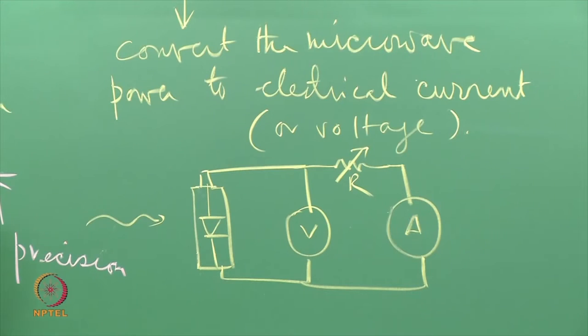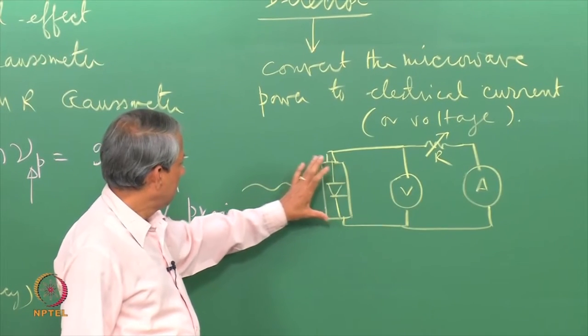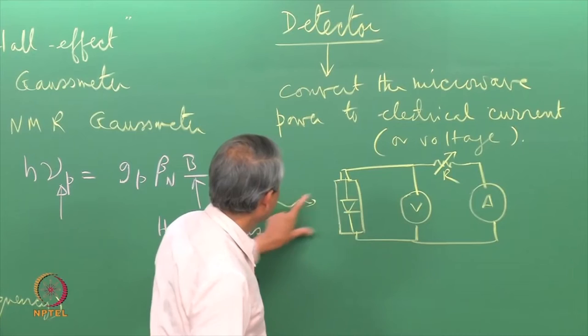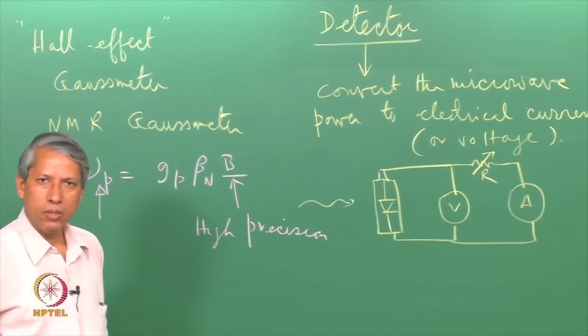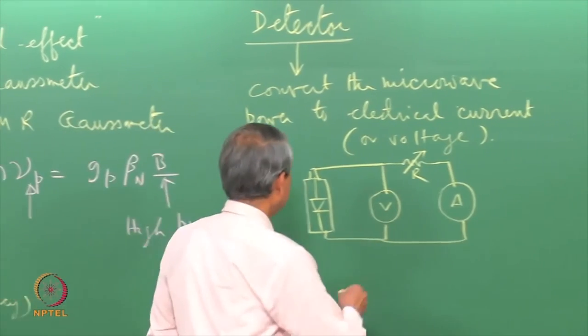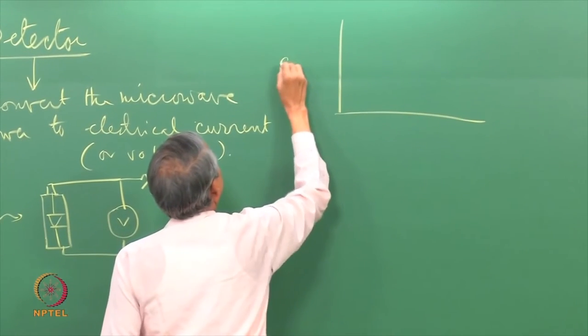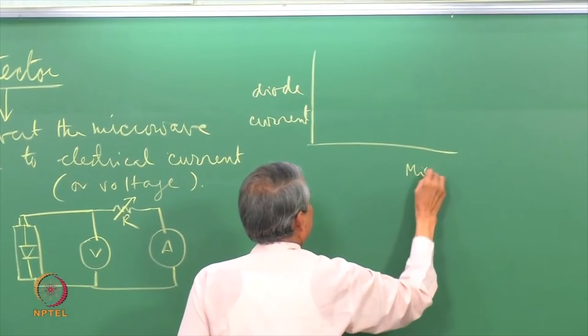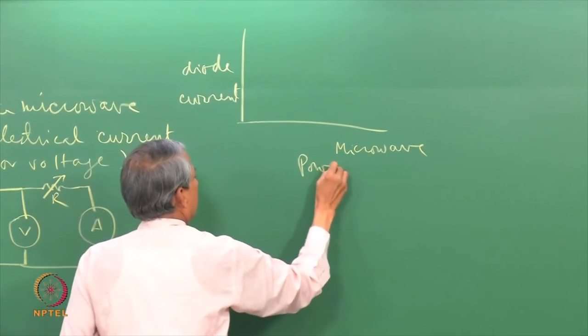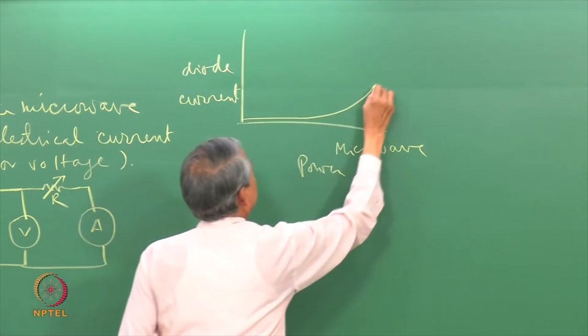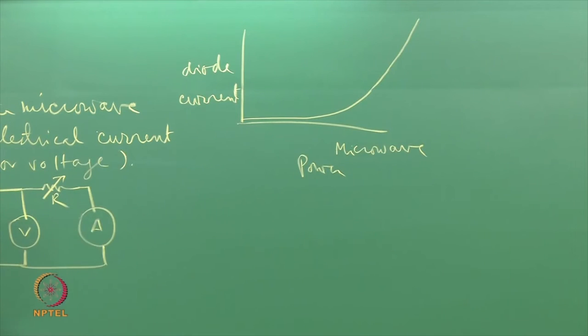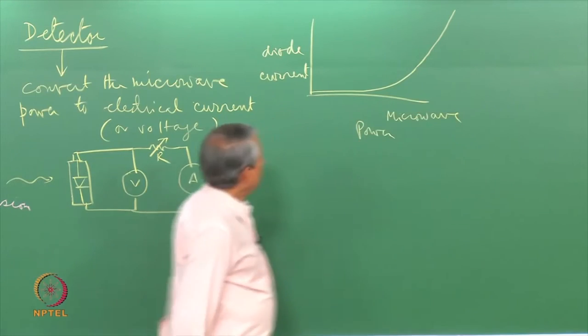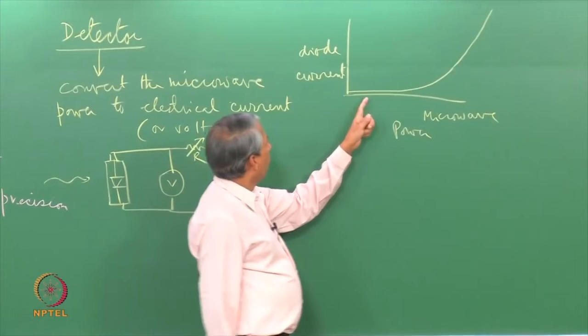The trouble is that this being a diode it is not a linear device. Current that is generated here because of the microwave power is a non-linear function of the power that is falling on the diode. It looks like this: diode current versus the power. At a very low level of microwave power the current is very small and then as the power increases it shoots up.